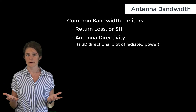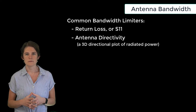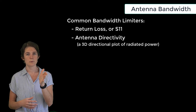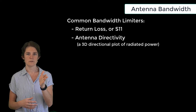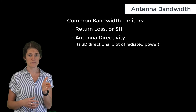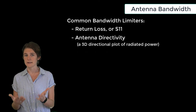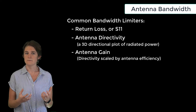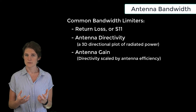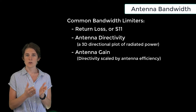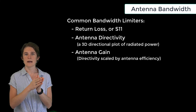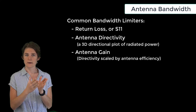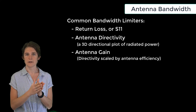So you might define the bandwidth of your antenna as the range of frequencies which result in some minimum proportion of the signal traveling in a particular direction. Another option is antenna gain, which is the same as directivity except that it's scaled by the antenna efficiency. With respect to gain, you would be defining the bandwidth of your antenna as the range of frequencies which result in some minimum power radiated in a particular direction.